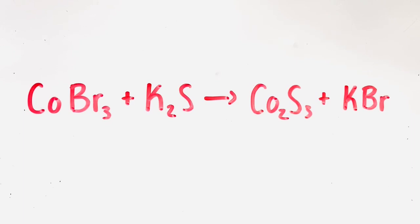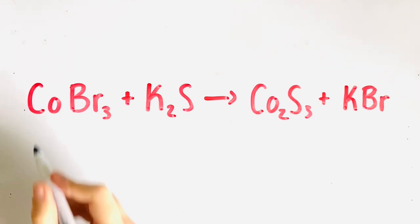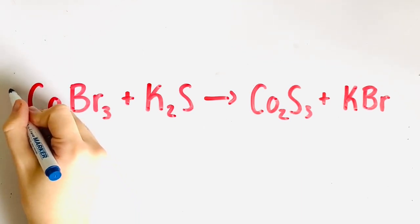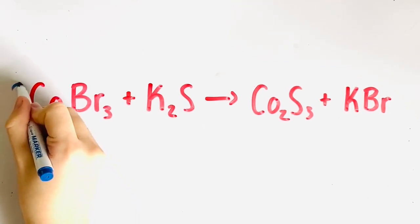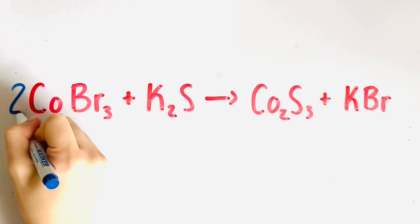Secondly, you can balance the equation mentally. In the equation COBr3 + K2S yields CO2S3 + KBr, we can see that there is one cobalt atom on the reactant side and two atoms of cobalt on the product side, so we can immediately add a coefficient of two in front of COBr3. This means that the cobalt is now balanced because there are two cobalt atoms on both sides.